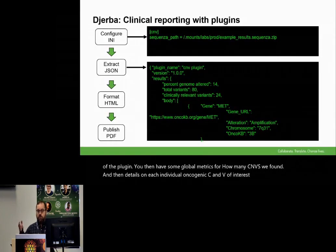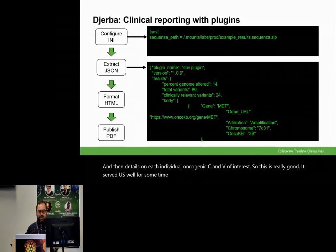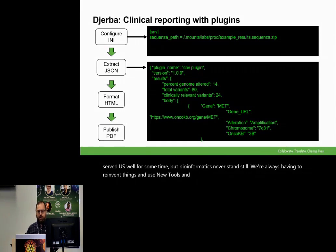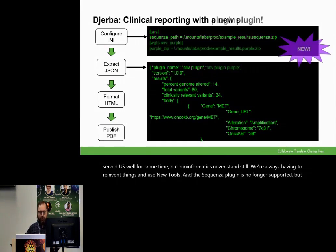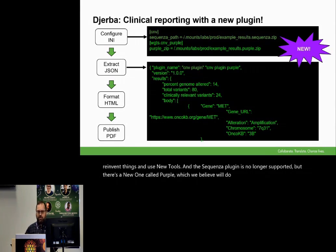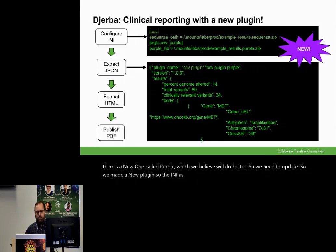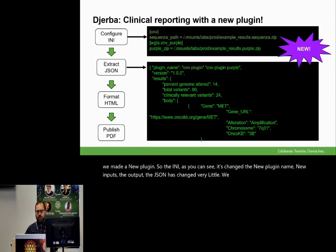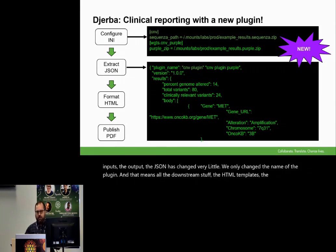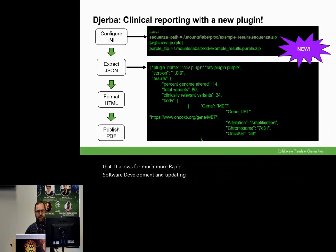This served us well for some time, but bioinformatics never stands still. We're always having to reinvent things and use new tools. The Sequenza plugin is no longer supported, but there's a new one called Purple which we believe will do better. So we need to update — so we made a new plugin. The INI has changed: new plugin name, new inputs. The output JSON has changed very little — we only changed the name of the plugin. And that means all the downstream stuff, the HTML templates and the PDF, we can reuse. It allows for much more rapid software development and updating. So the JSON provides a template of the essential data that we need to capture for these metrics.